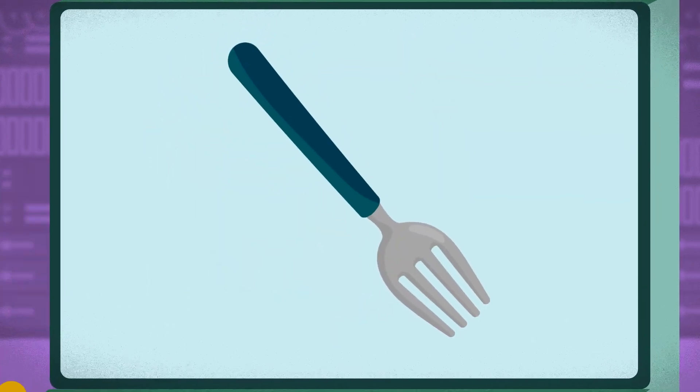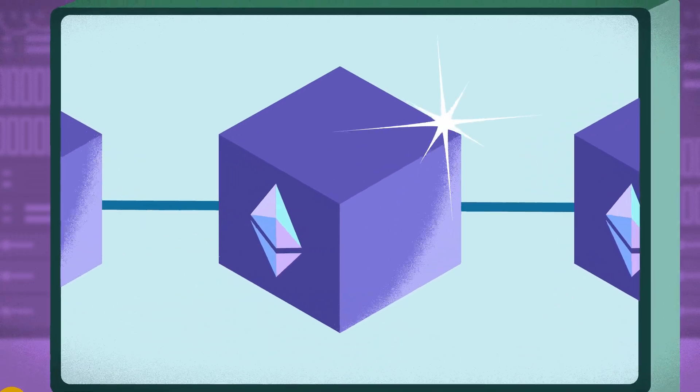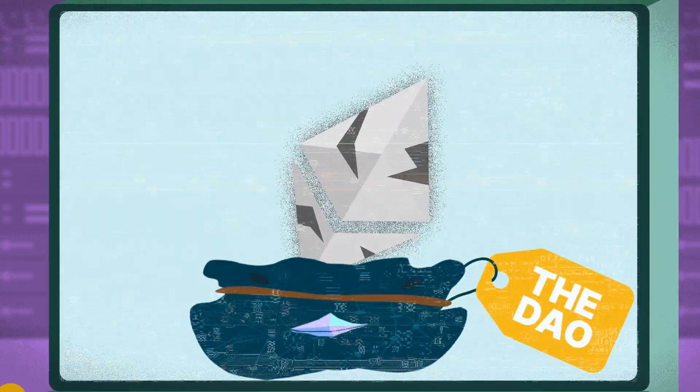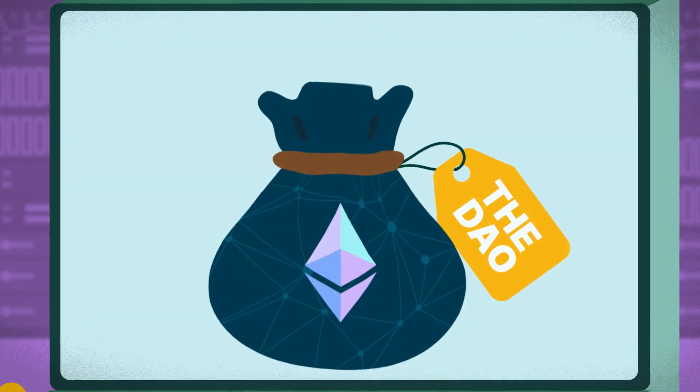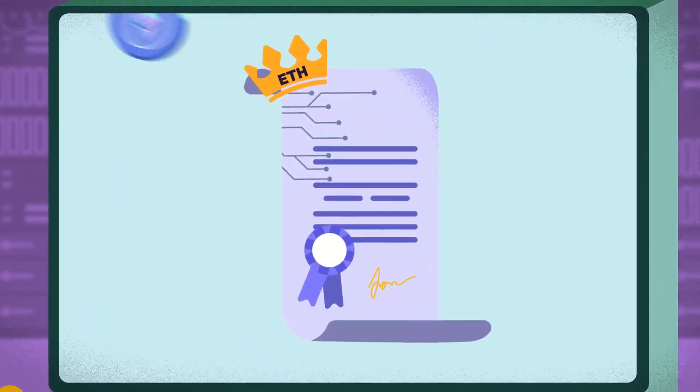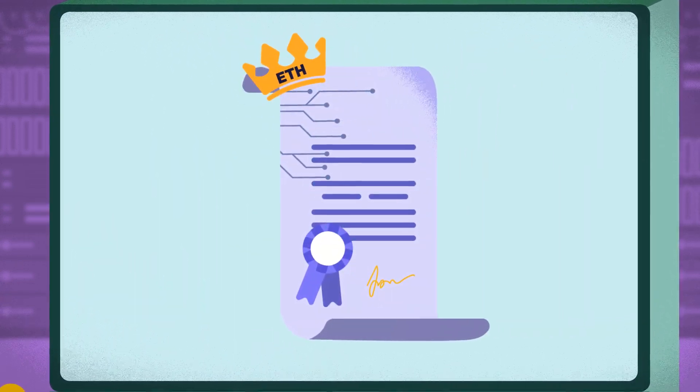The solution? A hard fork. Ethereum's developers proposed the creation of a new blockchain that would undo the DAO hack by moving the stolen funds to a new contract where it could be refunded to the original investors.